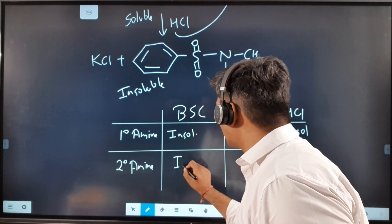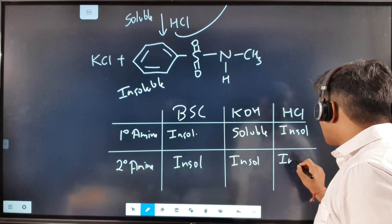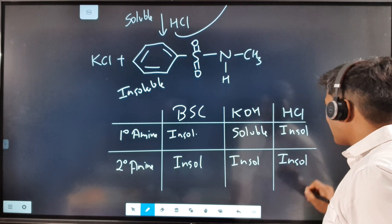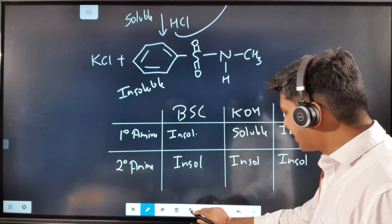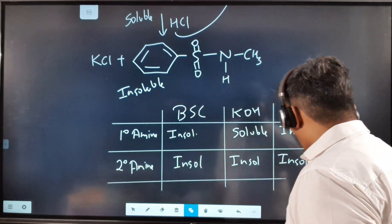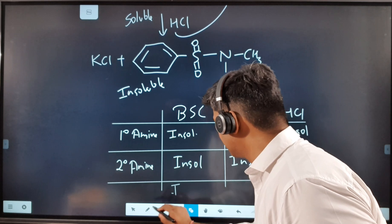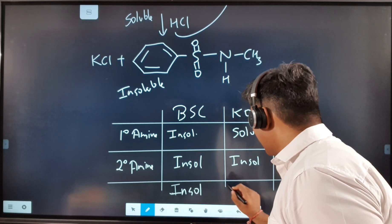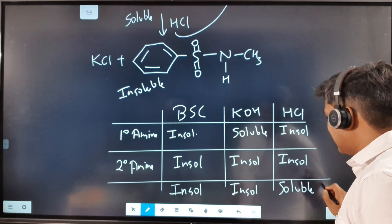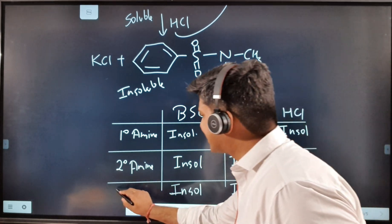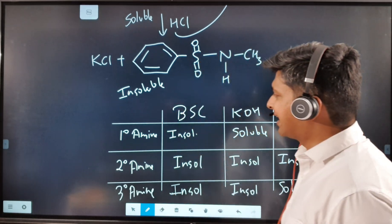If you get a pattern of insoluble throughout — insoluble after BSC, insoluble after KOH, and insoluble after HCl — then the amine is a secondary amine. If the pattern is insoluble after BSC, insoluble after KOH, but soluble after HCl, then it is a tertiary amine.